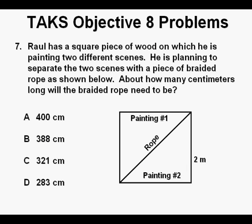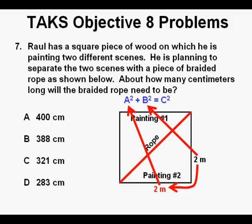Problem 7. Raul has a square piece of wood on which he is painting two different scenes. He is planning to separate the two scenes with a piece of braided rope as shown below. About how many centimeters long will the braided rope need to be? We're going to find the length of this piece of rope separating the two areas shown here in red. One way to look at this problem is to use Pythagorean theorem A squared plus B squared equals C squared. In order to use this we need two sides of the right triangle. This other side or leg of that right triangle is also 2 meters. So these are our A and our B to use in the formula.